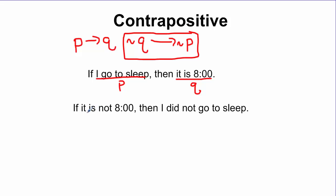Notice in this one: it is not 8 o'clock. I got this from Q — Q was originally 'it is 8 o'clock,' which was my conclusion. But I took the conclusion, placed it where the hypothesis usually goes, and made it the negation. So 'it is 8 o'clock' becomes 'it is not 8 o'clock' — this is the negation of Q.